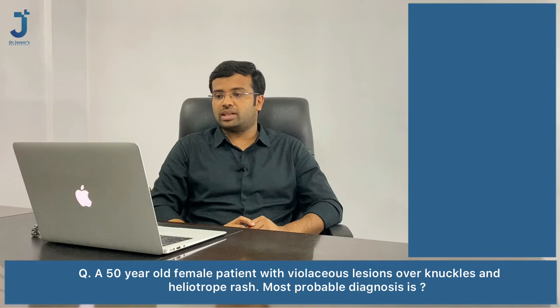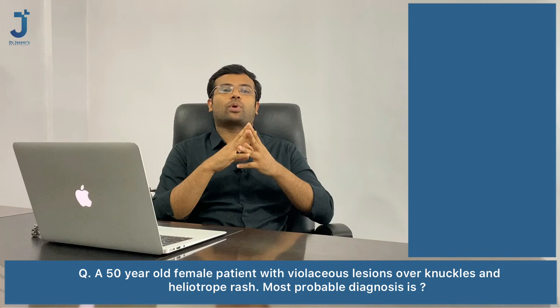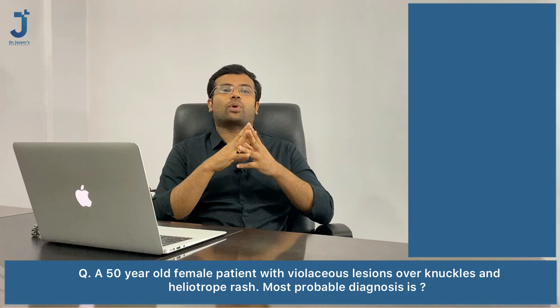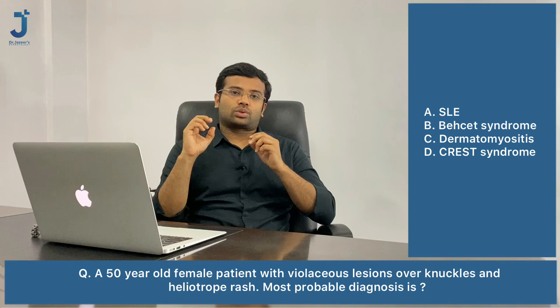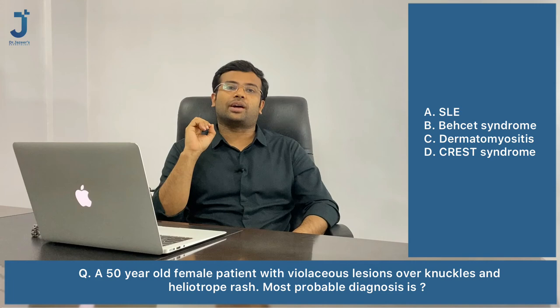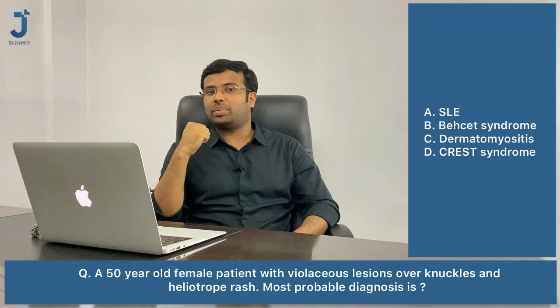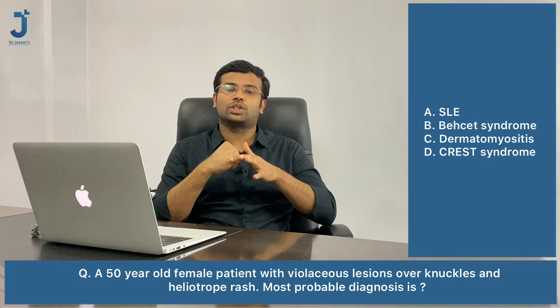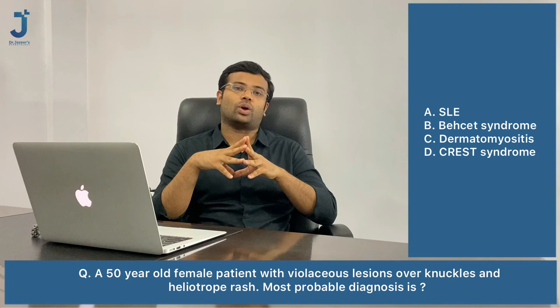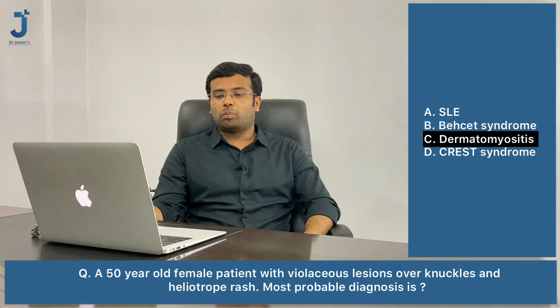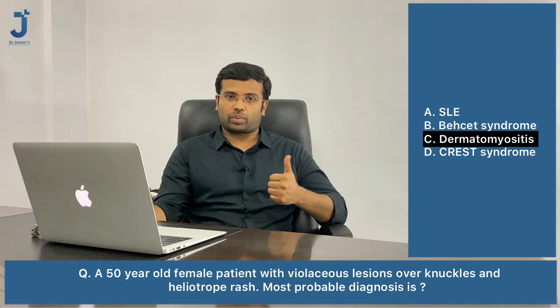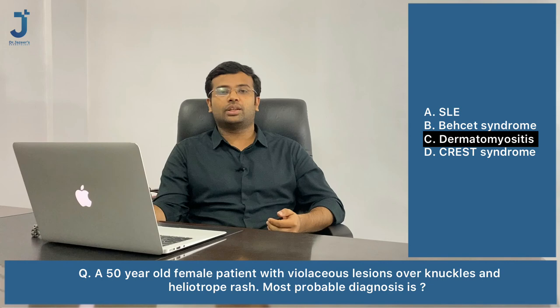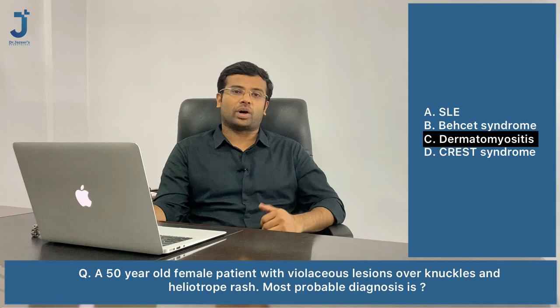Next question: a 50-year-old female presents with violaceous lesions over the knuckles along with a heliotrope rash. What is the most probable diagnosis? Options are SLE, Behçet syndrome, dermatomyositis, and CREST syndrome. Heliotrope rash is a purple violaceous rash compared to the heliotrope flower. Combined with violaceous lesions over the knuckles — Gottron's papules — this is specific for dermatomyositis. Other cutaneous findings in dermatomyositis include the shawl sign and holster sign.